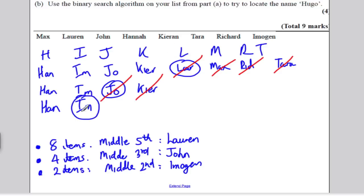You know that Hugo should be before Imogen, so therefore you cross off Imogen and whatever you're left with should be the answer. But you need to write down that Hannah is answer, not Hugo. So Hugo is not in our original list, was not in this.